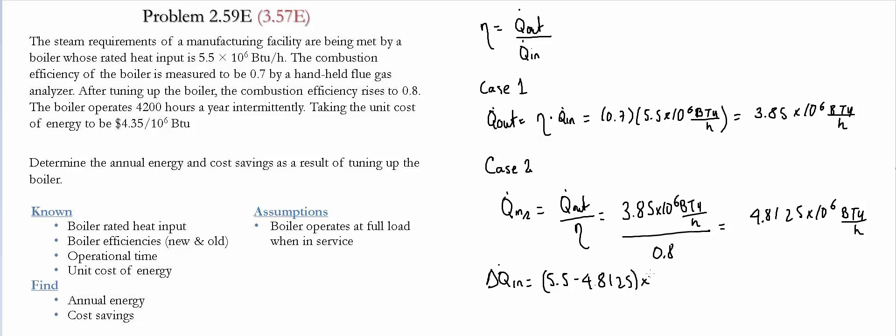And this is all times 10 to the 6 BTU per hour. This value gives us 6.875 times 10 to the 5 BTU per hour.